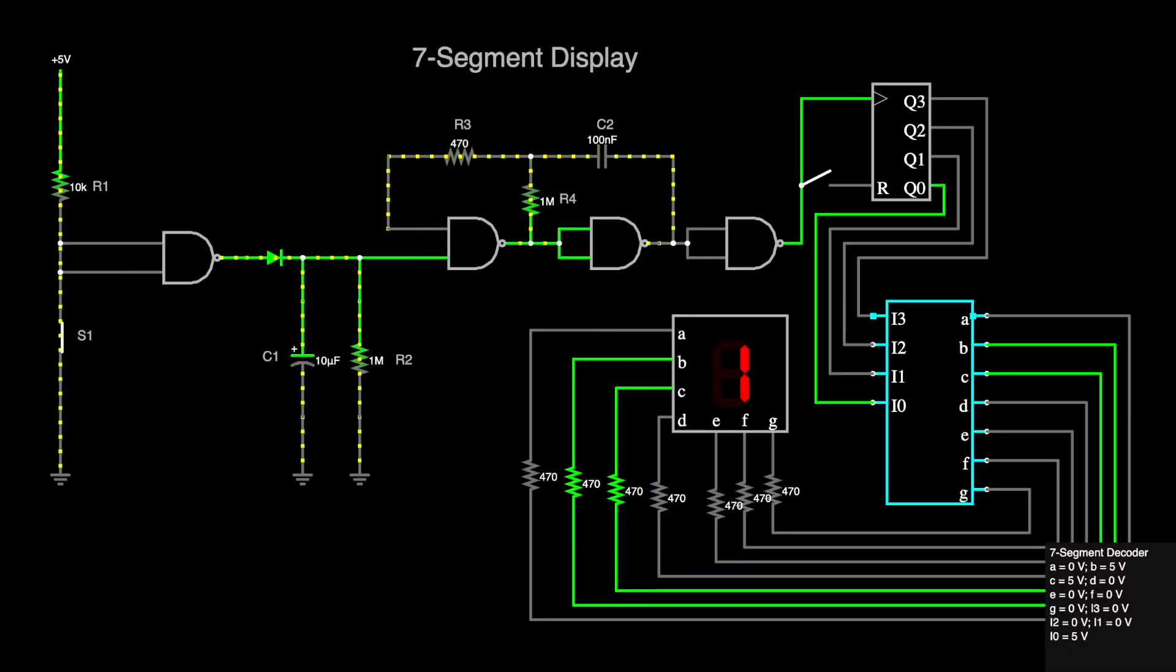This is the entire counting circuit in Falstad. It counts from 0 to 9 with the addition of the six hexadecimal letters, A to F.